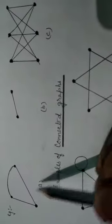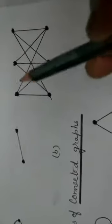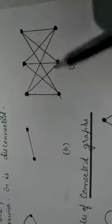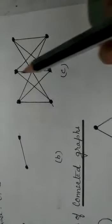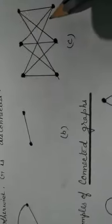Here we have three examples. In part A, three vertices are there and each one is connected with at least one path. Here two vertices connected with one path. Here six vertices, each connected with one path — this one with all three, and so on. So these are examples of connected graph.